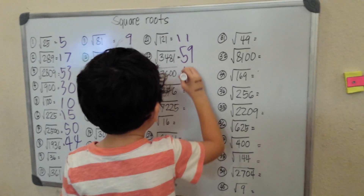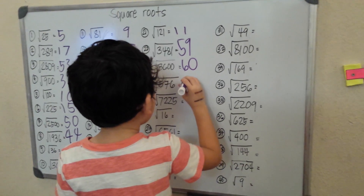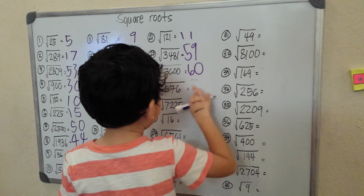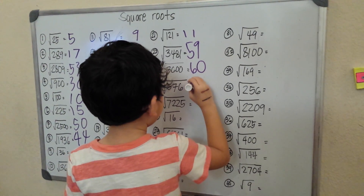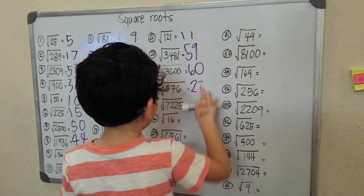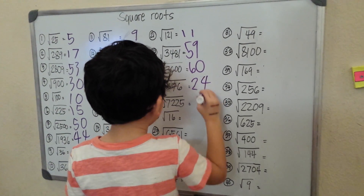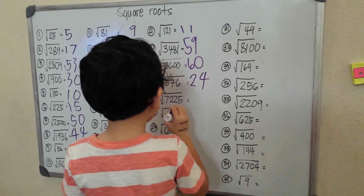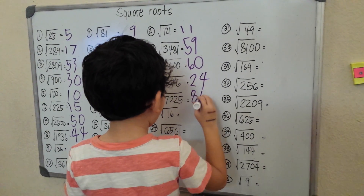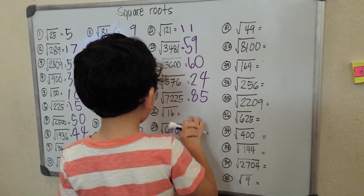Square root of 576 is 24. Hold on, 24. Square root of 7225 is 85, I guess.